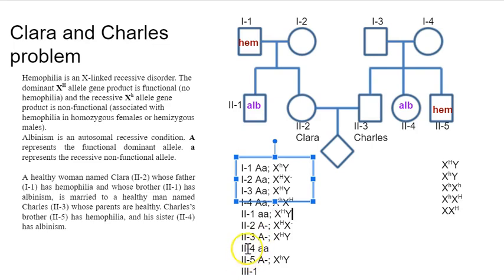All right. Who else have we got? We've got individual 2-4, which is Charles's sister. Well, she doesn't have hemophilia. So she's got to have one X with a big H on it. And then what else does she have to have? Well, her parents are 1-3 and 1-4. We know the dad has got an X with a big H. We know the mom is a carrier. So we don't actually know what she's got for the other allele. So we're going to say X with a dash to symbolize that we don't know.